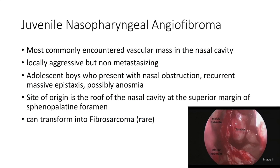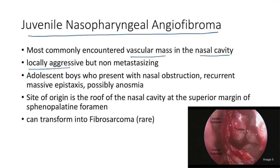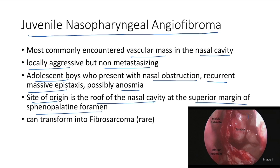Juvenile nasopharyngeal angiofibroma is the most commonly encountered vascular mass in the nasal cavity. It is locally aggressive but non-metastasizing, usually seen in adolescent boys. Presentation includes nasal obstruction, recurrent massive epistaxis, and anosmia. The site of origin is the roof of the nasal cavity at the superior margin of the sphenopalatine foramen. It can rarely transform into fibrosarcoma.